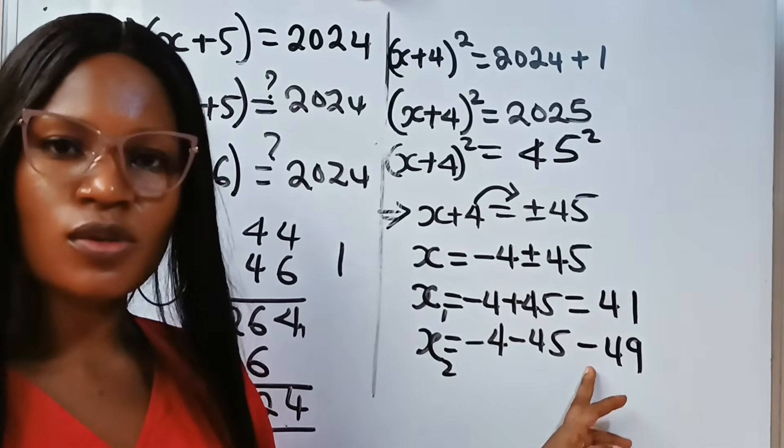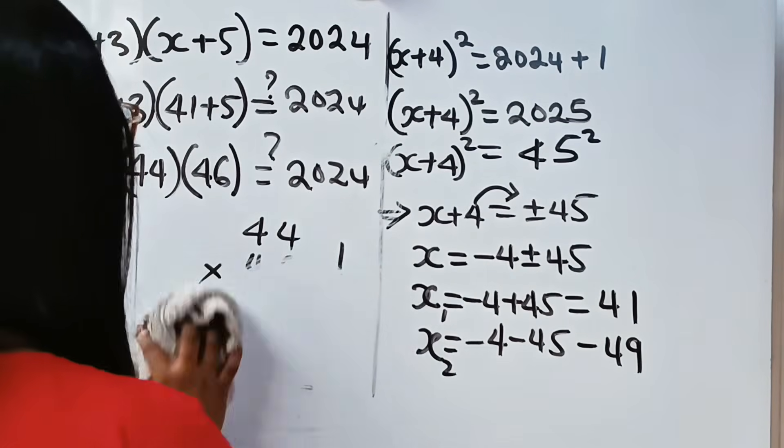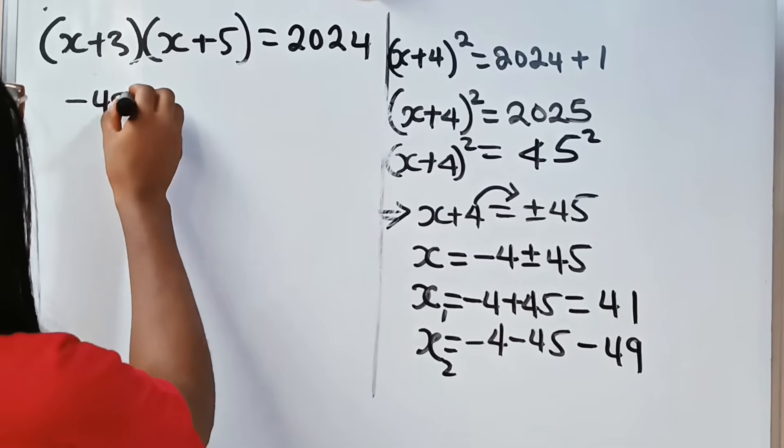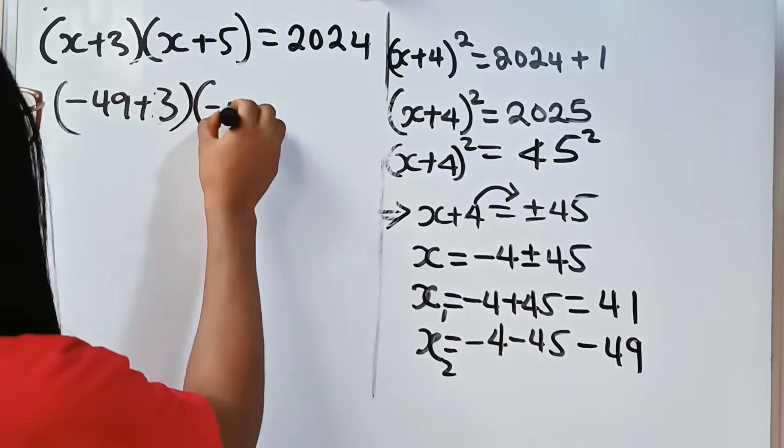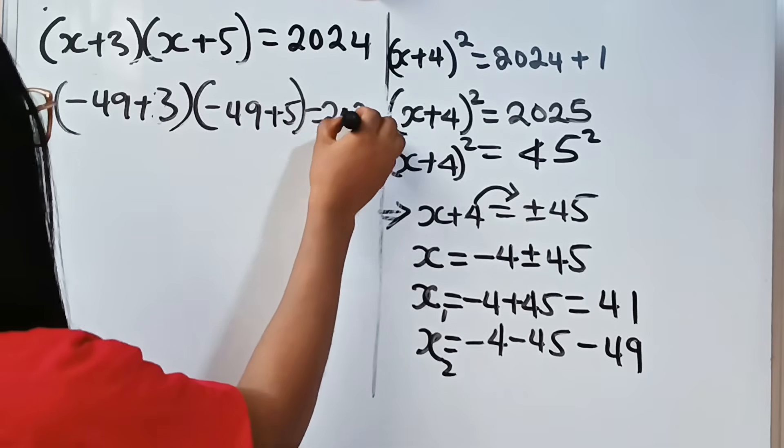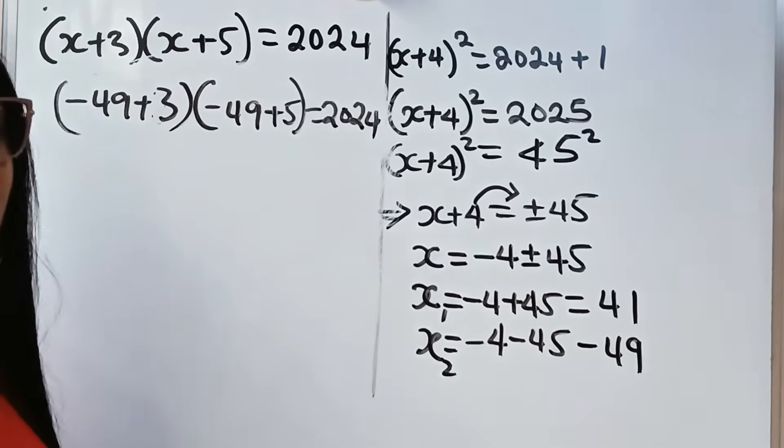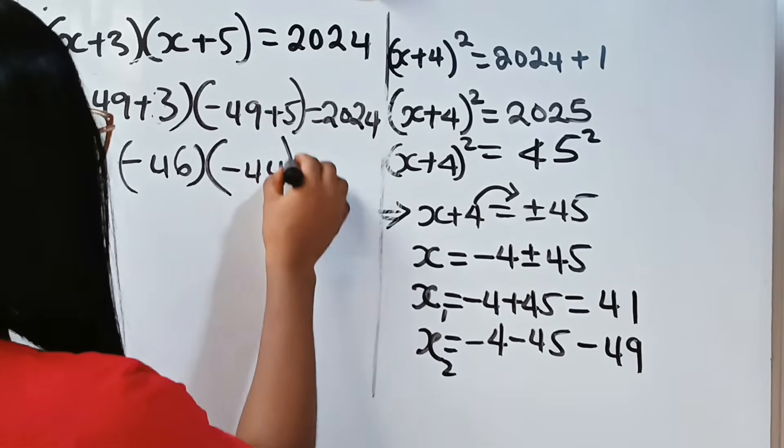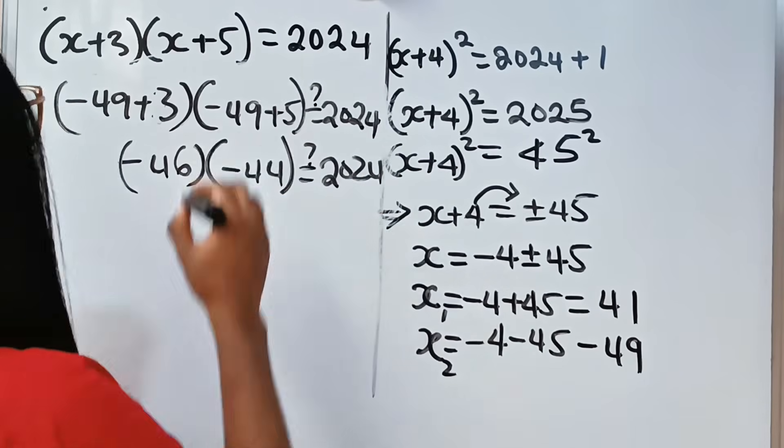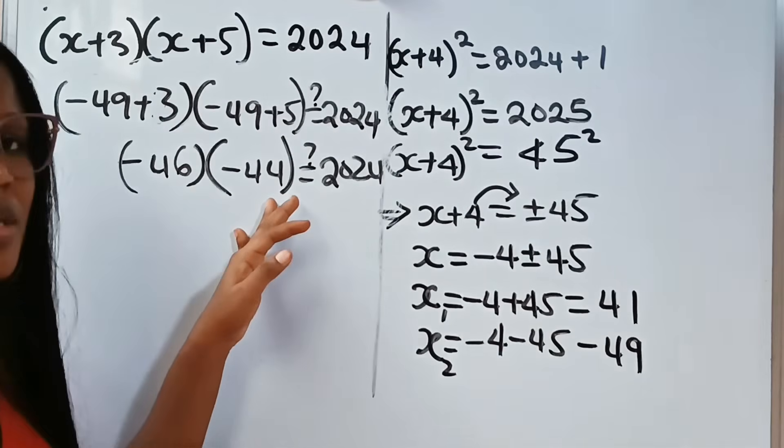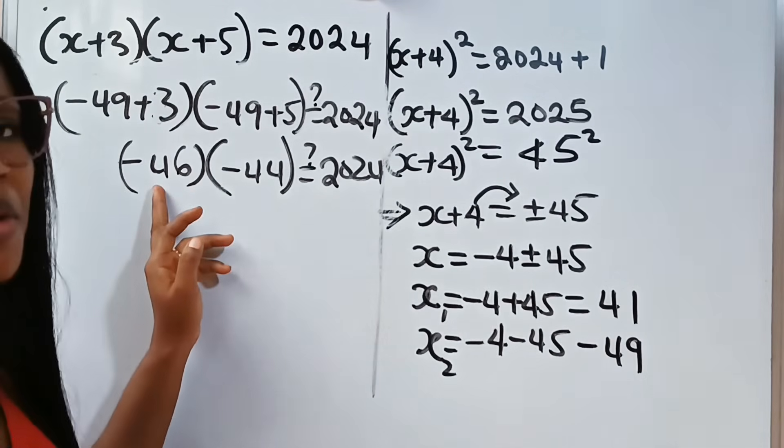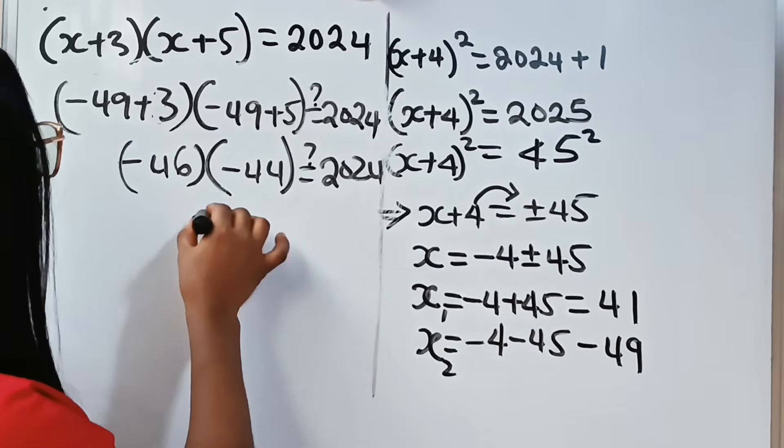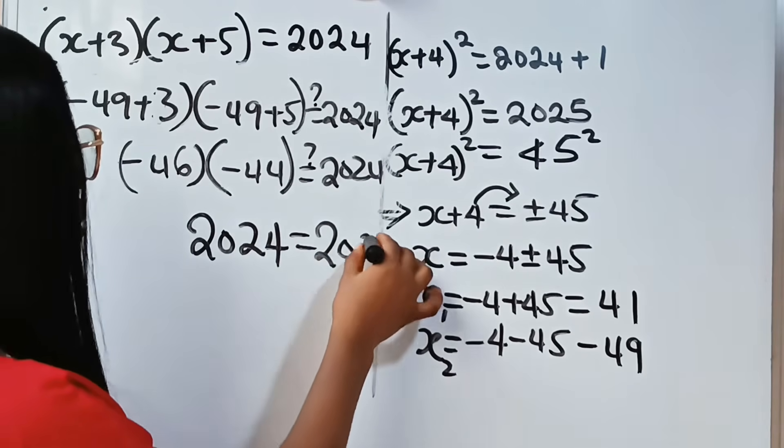Let's check if -49 is also a root. When x is -49, we have (-49 + 3)(-49 + 5) = 2024. -49 + 3 is -46, and -49 + 5 is -44. You can see this is exactly what we got in the other one, except with negative values. Negative times negative is positive, and 46 times 44 is 2024. So you can see the answer we got is correct.